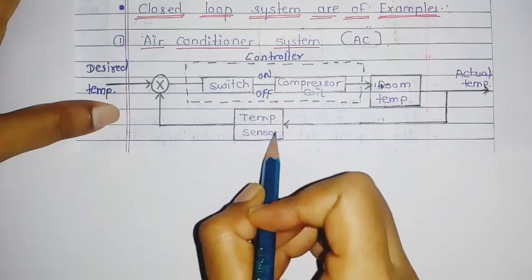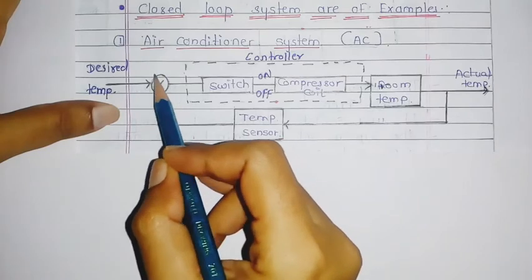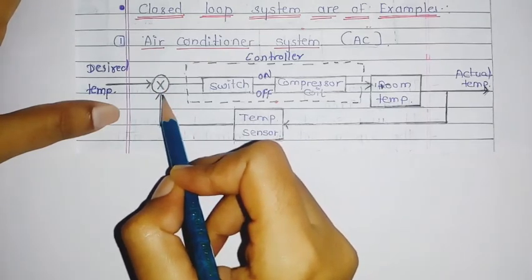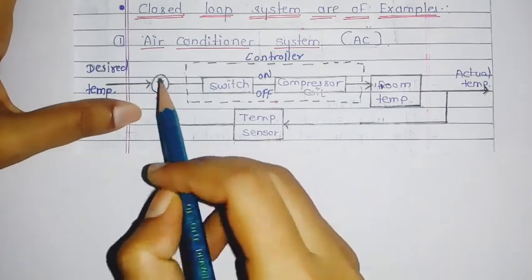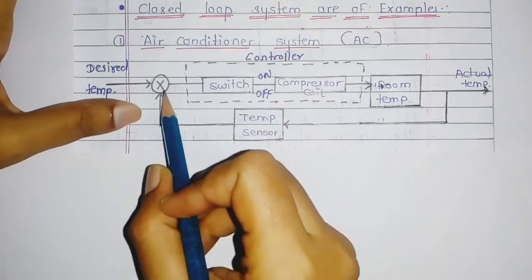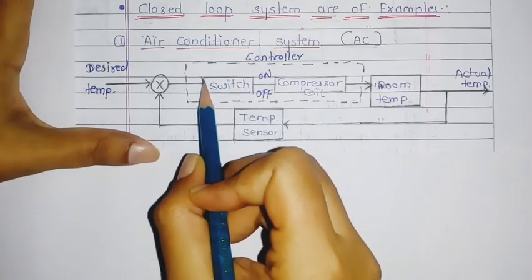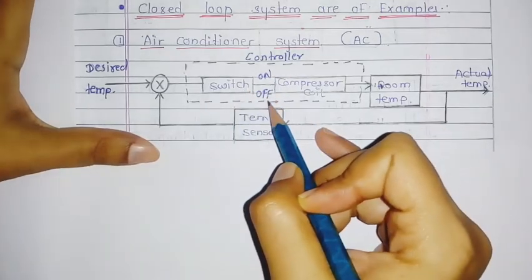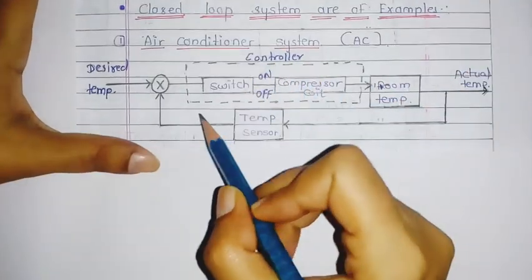The comparator continuously compares the desired temperature and the room temperature which is coming from the temperature sensor. The desired temperature and the sensed temperature are compared and the result is given to the switch.